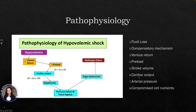Let's look at the pathophysiology of hypovolemic shock. You have some type of fluid loss — this can be either internal or external — which leads to a compensatory mechanism. The resulting drop in arterial blood pressure activates the body's compensatory mechanism in an attempt to increase intravascular volume, which then leads to diminished venous return. The preload or filling pressure of the heart becomes reduced and the stroke volume is decreased. Cardiac output is decreased because of a decrease in stroke volume.